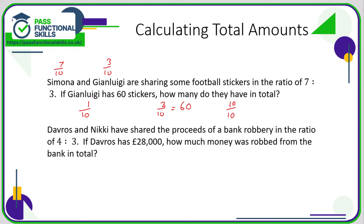If three-tenths is sixty, then what is one-tenth? One-tenth is three times less than three-tenths, so one-tenth has a value of twenty. Think of it like this: if three candles cost sixty pounds, one candle costs twenty pounds — simple. If one-tenth is twenty, then ten-tenths is ten times greater, so ten-tenths is two hundred. In total there are two hundred stickers, and from that we can work out that Simone has one hundred and forty stickers.